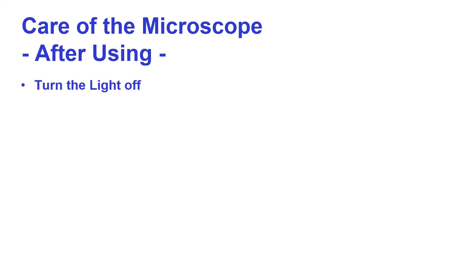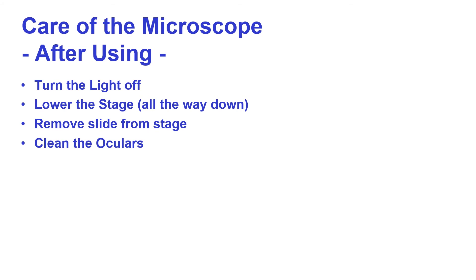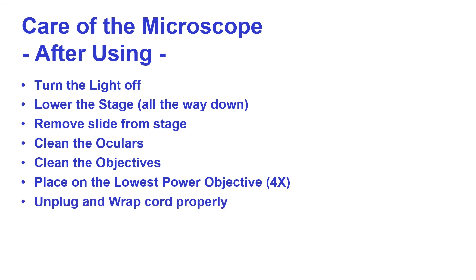After using the microscope turn off the light. You are going to lower the stage all the way down, remove the slide from the stage, clean the oculars, clean the objectives, place it on the lowest power objective which is the 4x, unplug and wrap the cord properly and return it using two hands to the numbered shelf. When you get back to the shelf remember to pick up the bag and cover it so that it doesn't gather dust.